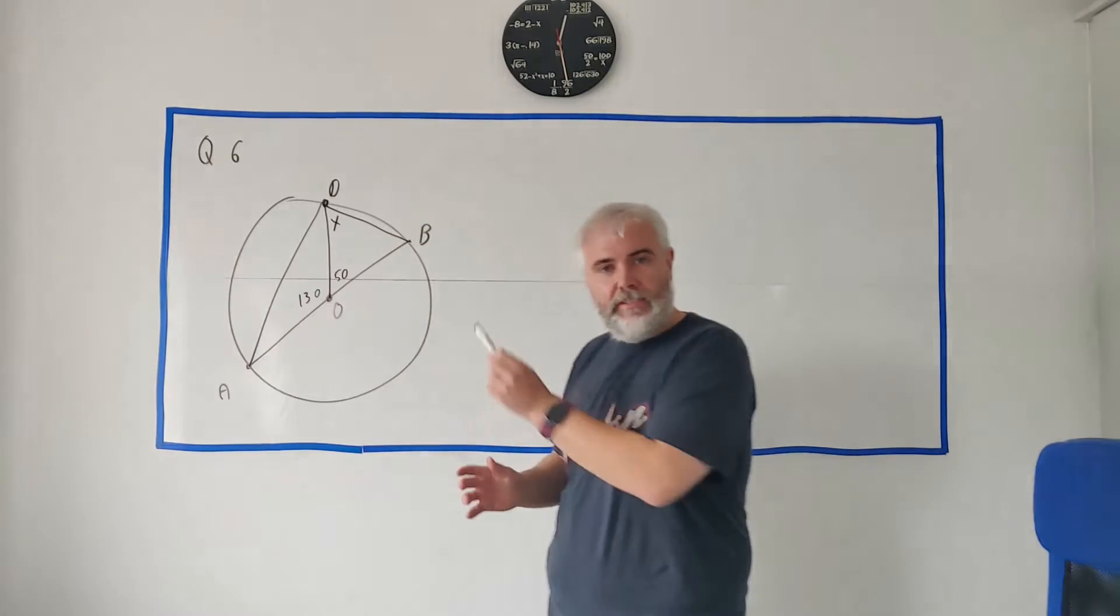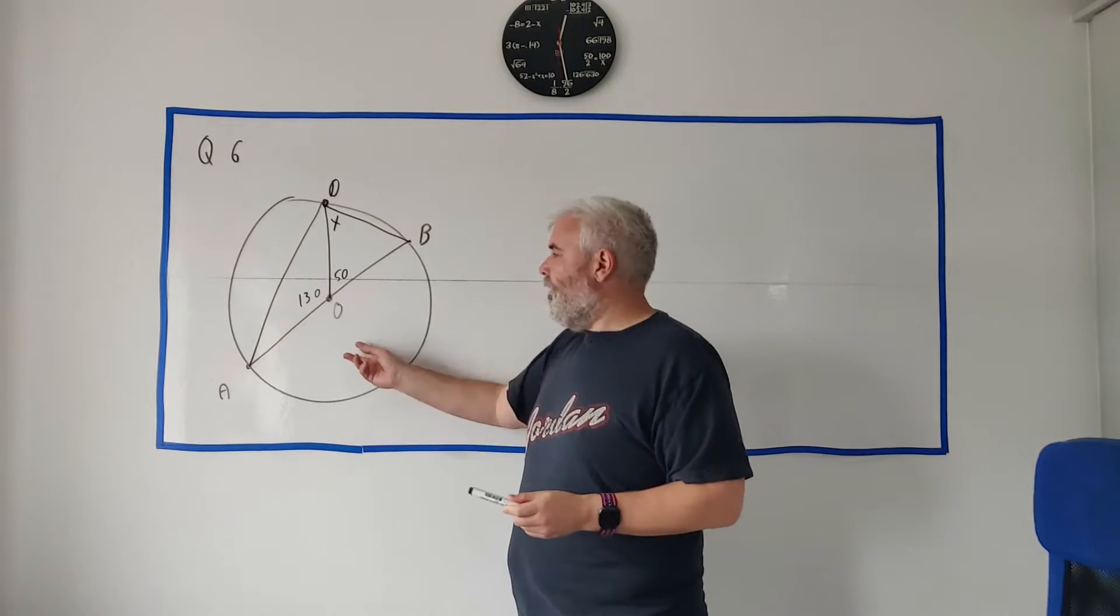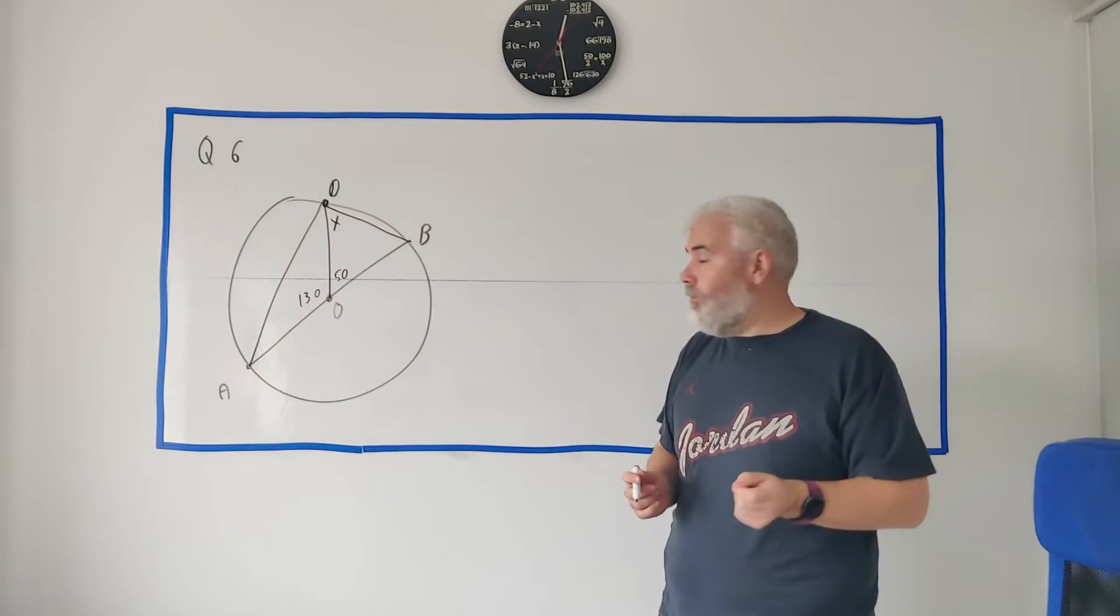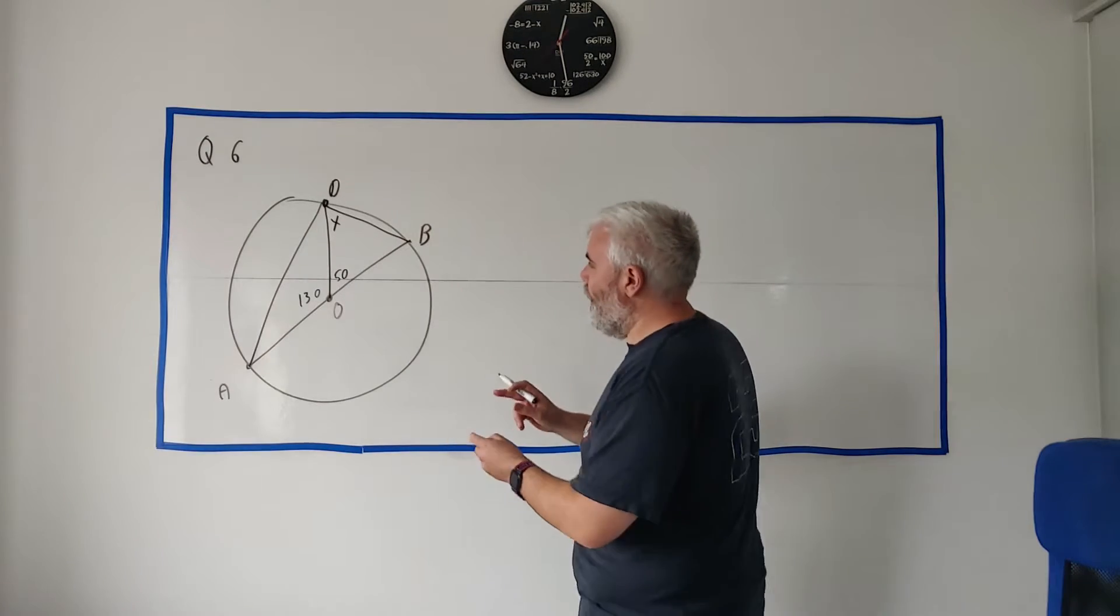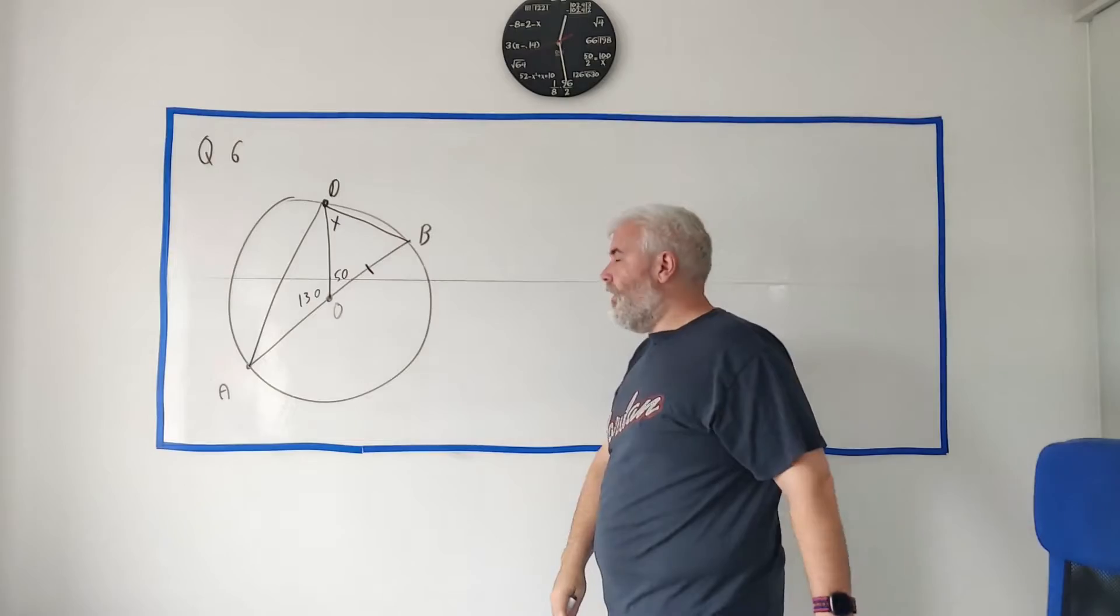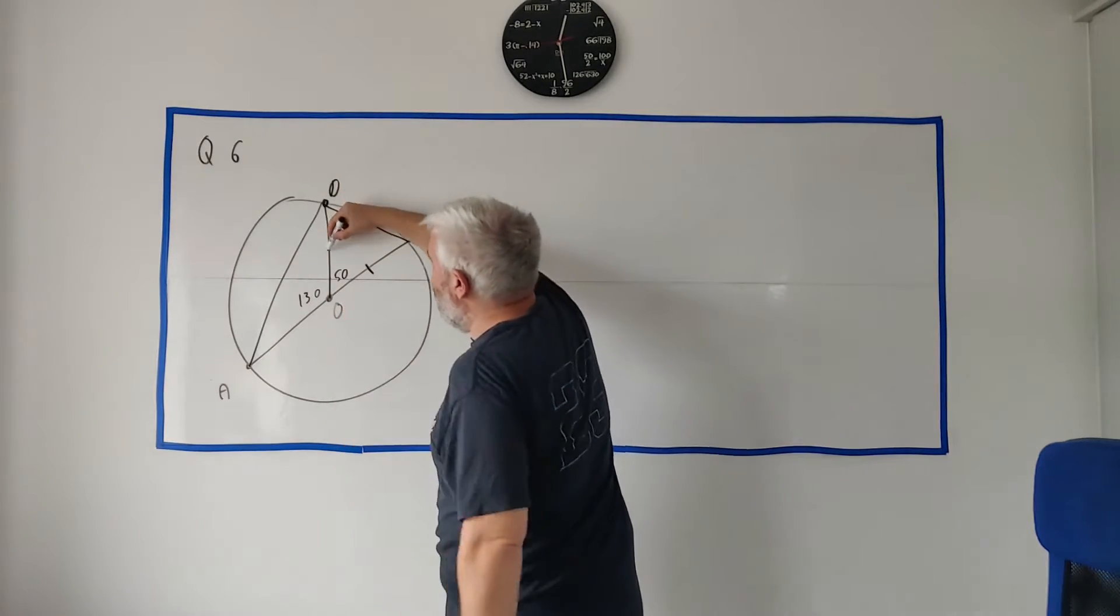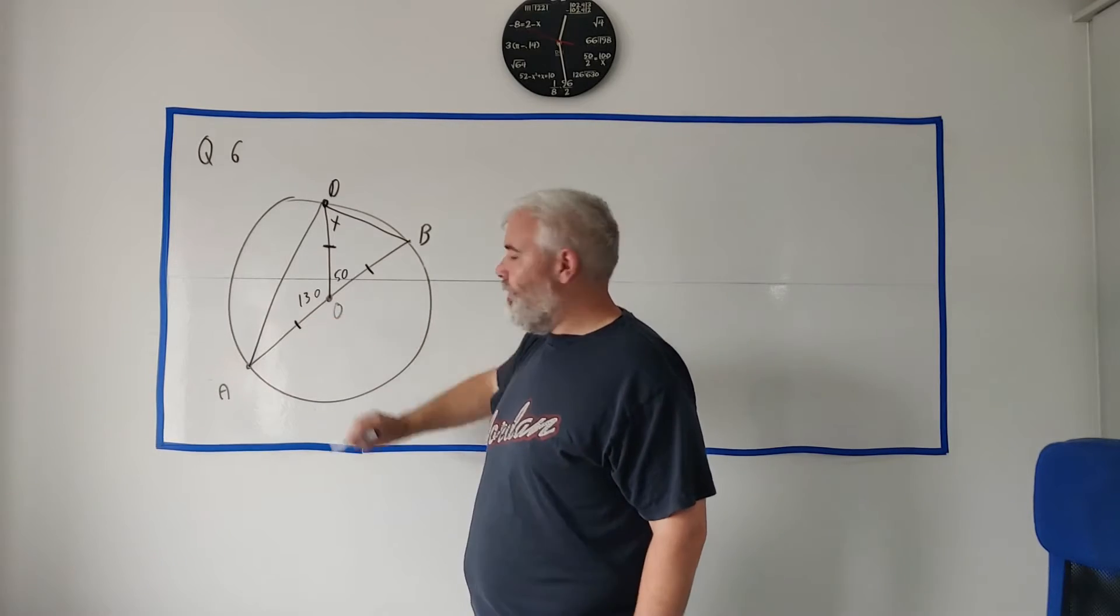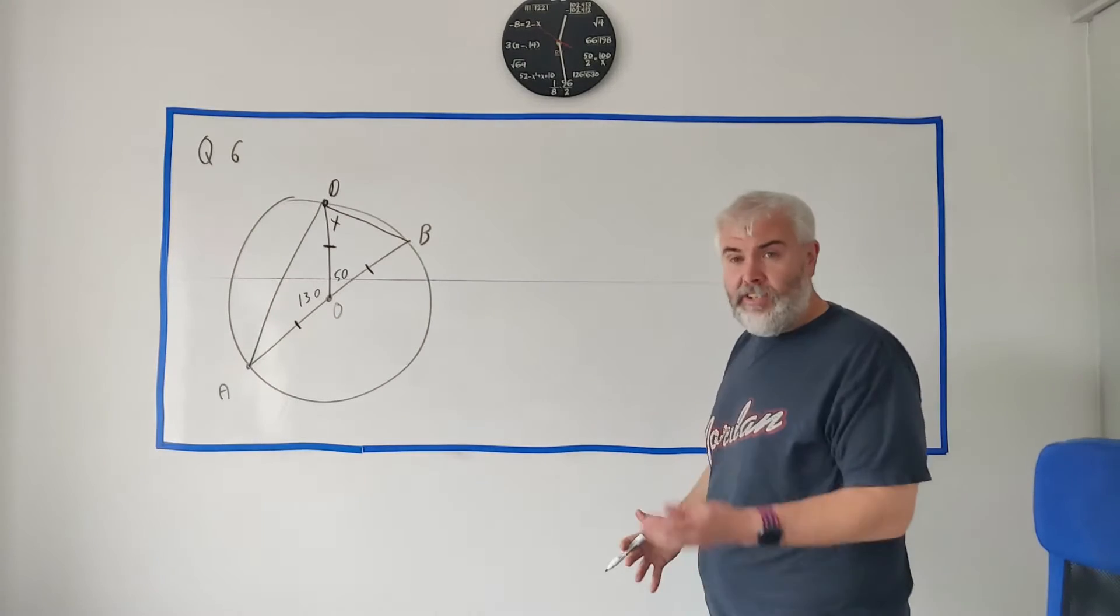And then a few other things, two things especially that are important to look for in a circle question, and that's a radius. So where's a radius? O to B, that's a radius, put a little line there. O to D, that's also a radius. Well, they're equal then. O to A, that's also a radius, that's all equal. That's going to be very helpful.